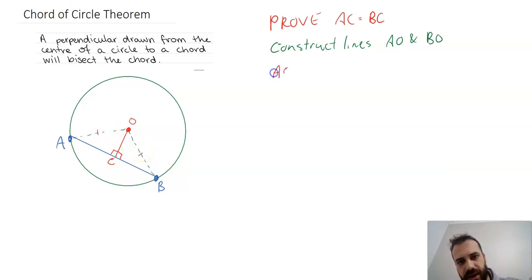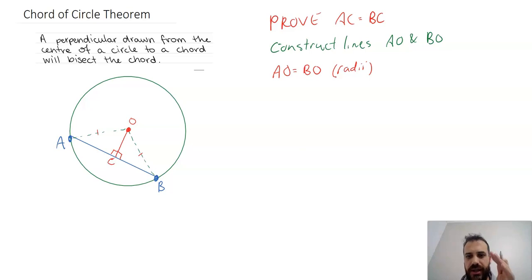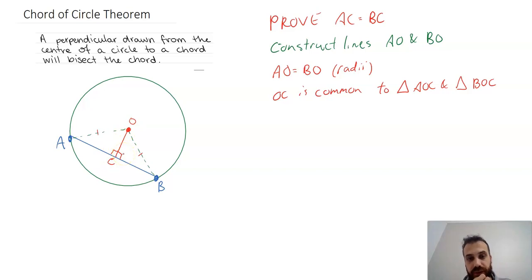I can now say that AO is equal to BO, and the reason for that — this happens all the time with circle theorems — is that they're both radii. Now look at triangle ACO and triangle BCO. They have a line in common: OC is common to both AOC and OCB. I know that length AO equals BO, that OC is the same in both, and that they are both right-angle triangles. This is enough to prove that triangle OBC and triangle OAC are congruent.